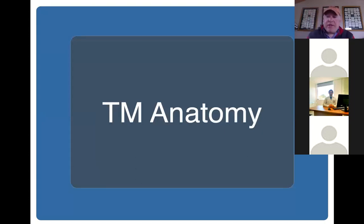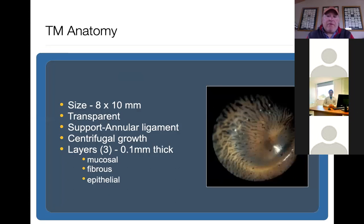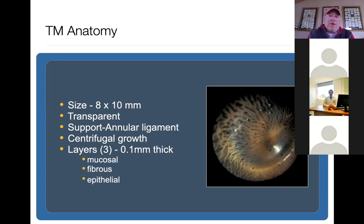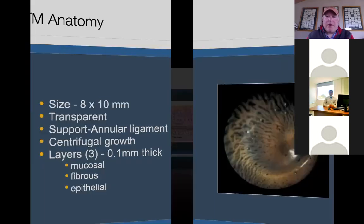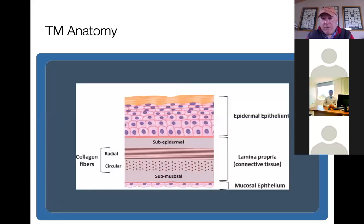Here's a little refresher on tympanic membrane anatomy. We're talking about an anatomic structure that's about 8 millimeters by 10 millimeters — not very big. It's a transparent membrane supported by the umbo of the malleus and the annular ligament. One interesting thing is the growth of the tympanic membrane is centrifugal — it goes from the umbo outwards. The tympanic membrane has three layers: the outer layer is an epidermal or squamous layer, which is what we see when we do otoscopy.